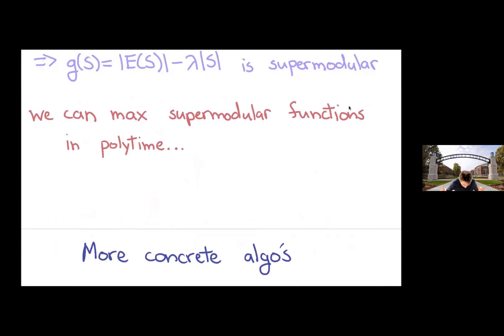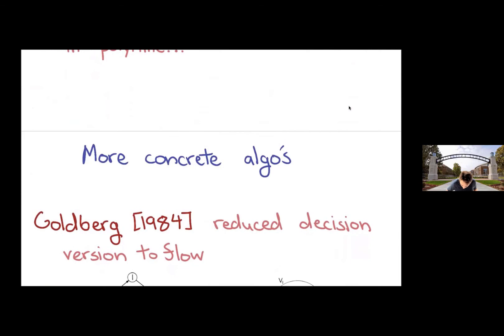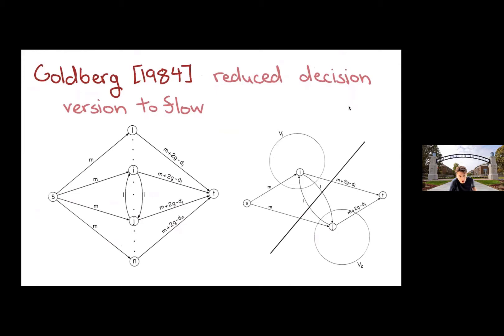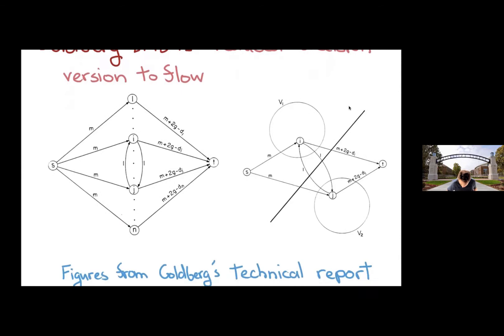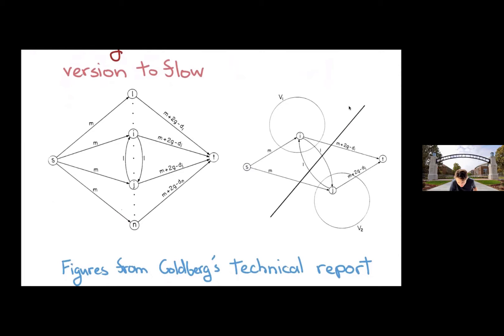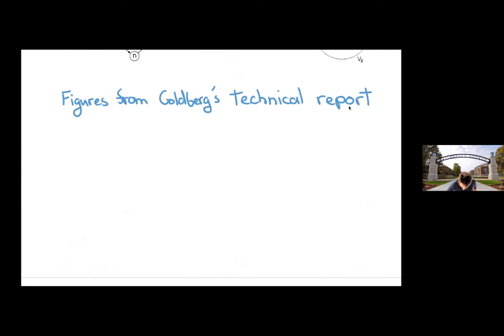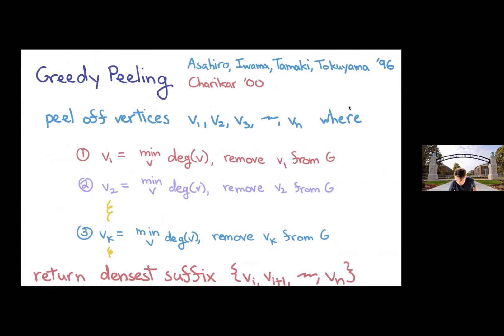As far as more concrete algorithms go than relying on this black box, Goldberg gave a reduction from that decision version to flow. Here are some figures from his original technical reports. The only thing really I should point out is that the number of edges and vertices in this auxiliary graph doesn't really change very much. Still roughly the input graph. Now, there's a second algorithm that's really popular in practice called greedy peeling. It was introduced by Asahiro et al, 96, and it was analyzed by Moses Charikar.